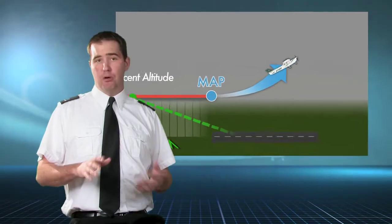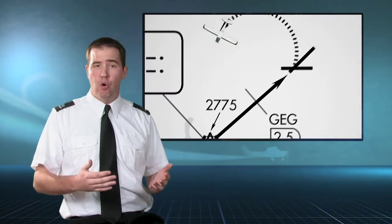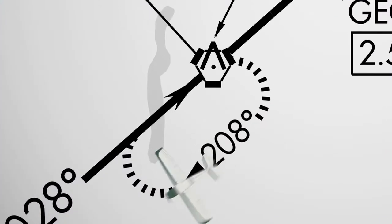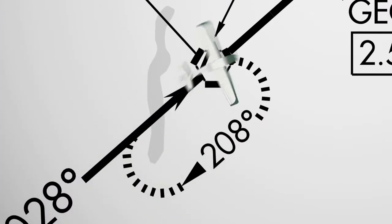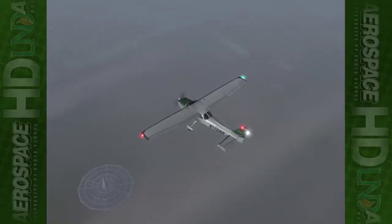A missed approach procedure can be considered the IFR version of a go-around or aborted landing, where the pilot will depart the airport and fly a specified route, course, or heading, typically arriving in a holding pattern. If a missed approach must be executed, the pilot should call out 'no contact, go-around' once the decision to execute the missed approach procedure has been made.